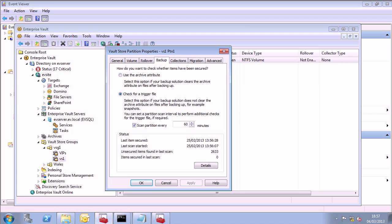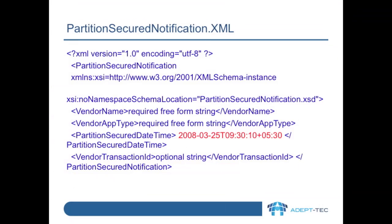In Enterprise Vault, there isn't any difference in configuration whichever trigger file is used. Just remember that if we are using the XML file, then this has to be created by your backup software. Here is an example of a partition-secured-notification.xml file. Like the traditional trigger file, this XML has to be placed at the root of each partition when the backup has been completed. Enterprise Vault will then post-process items based on the contents of the XML file.